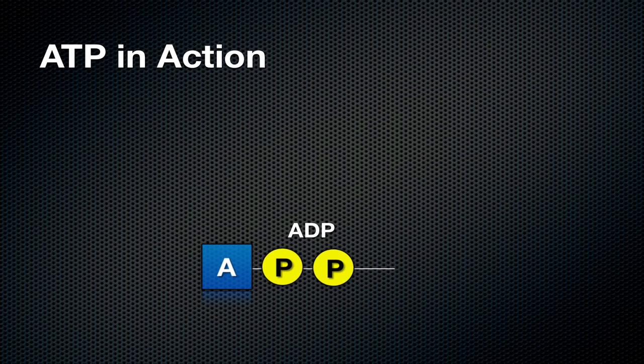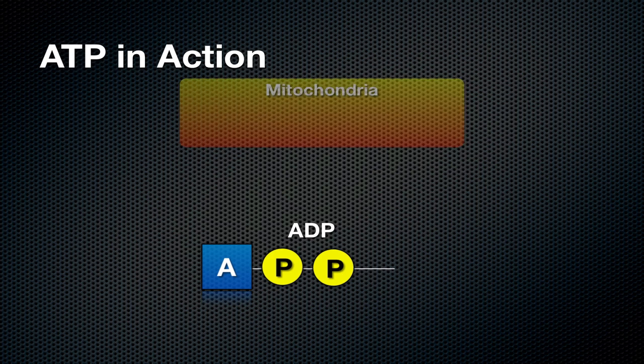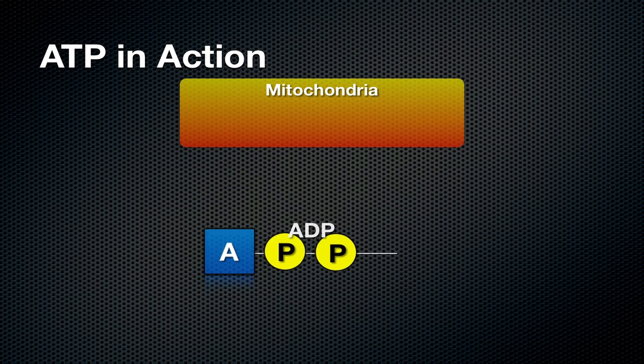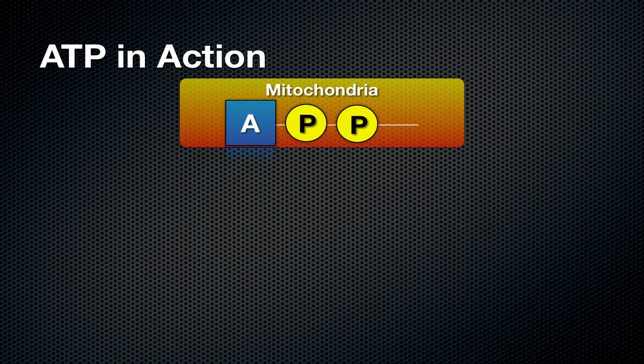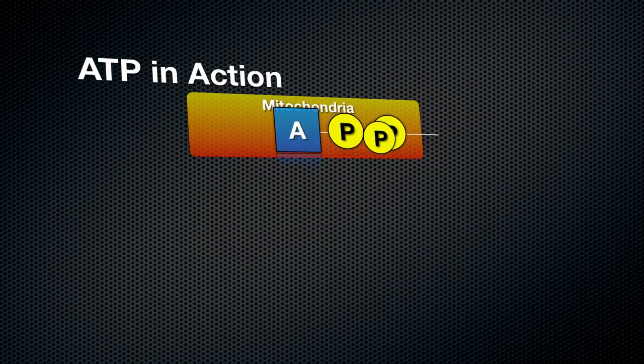If we want to use this molecule again, we need to recharge it, as we would do for a rechargeable battery. In order to do this in the cell, we need a very special organelle called the mitochondria. ADP then goes to the mitochondria, and the ADP gets recharged by the mitochondria adding another phosphate on, and it's now ATP again.